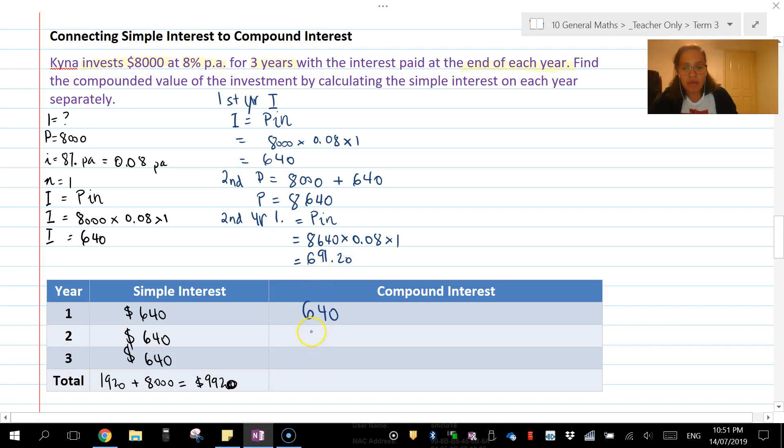The amount of compound interest generated is $691.20. The third year principal is going to be our initial amount from the second year, $8,640, plus $691.20 from that second year, which gives us a total value of $9,331.20.